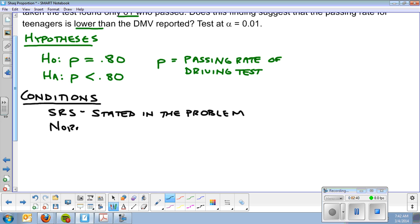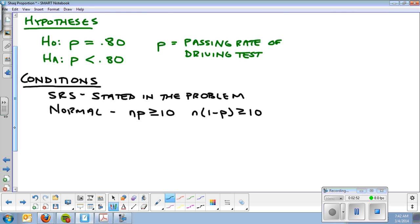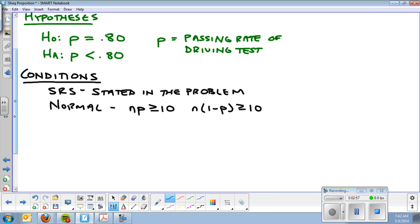The second one is normal, same as before. The main difference here is that we're using NP greater than or equal to 10, and N(1 minus P) greater than or equal to 10. That's the number of expected successes. So out of N is 90. Out of 90 kids, we would expect 80% to pass, which is 72 successes. And out of 90, we would expect 20% to not pass, which is 18. And both of those are over 10.